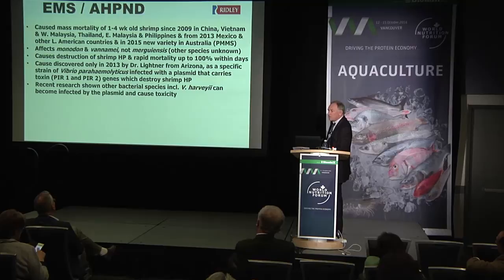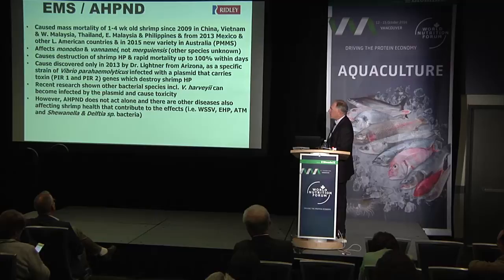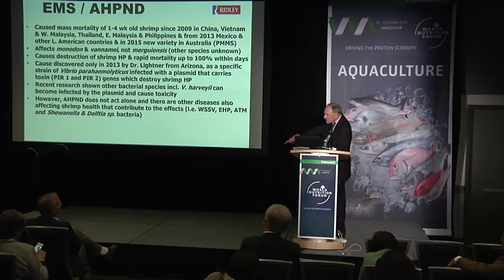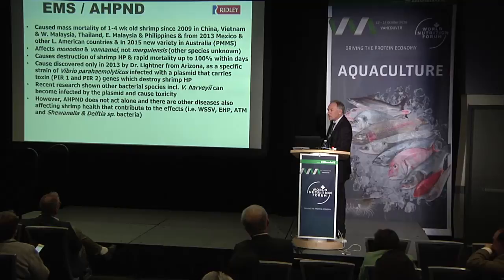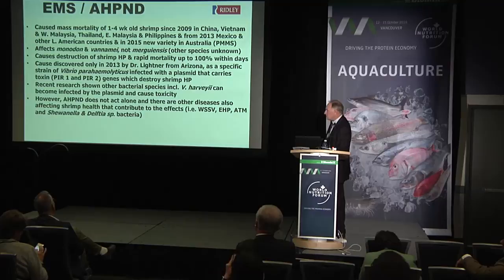Recent research has shown other bacterial species can also be infected by similar plasmids — the Australian outbreak is caused by Vibrio harveyi infected with this plasmid. But AHPND gets a lot of blame and doesn't act alone. A lot of survey work showed that only 20% of mortality in dying ponds was actually caused by AHPND. Many other disease issues cause more mortality than EMS, including White Spot, EHP, ATM, and other bacterial species like Shewanella and Delftia, which exacerbate the problem caused by EMS.